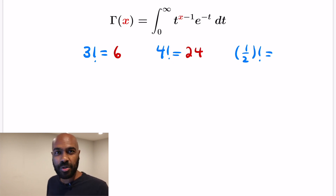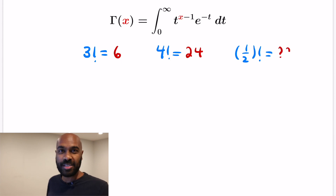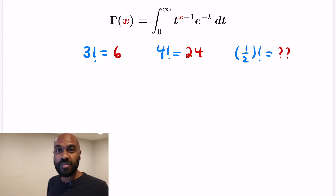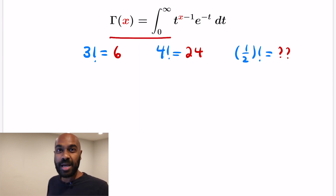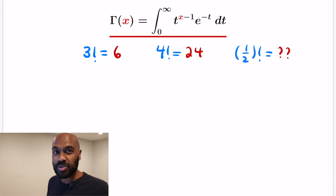But what's a half factorial? Well it turns out there's a reasonable way to answer this question, and it involves this gamma function that we see up here, which turns out to have factorial values at positive integer inputs. So it gives us a way to generalize what the factorial is, and we'll be able to use that in this video to get a reasonable answer for what a half factorial ought to be. And the answer is actually quite surprising.